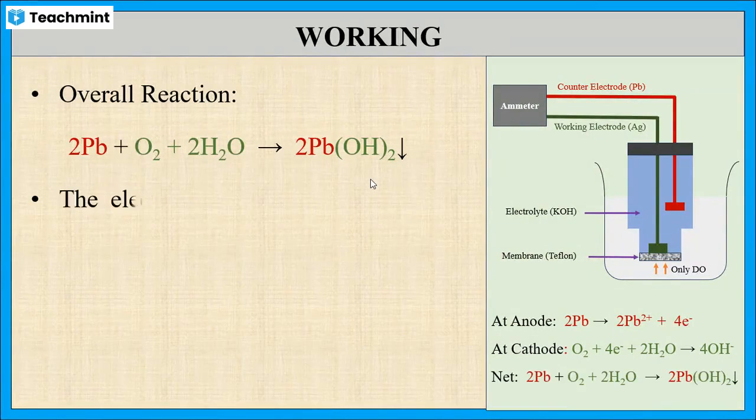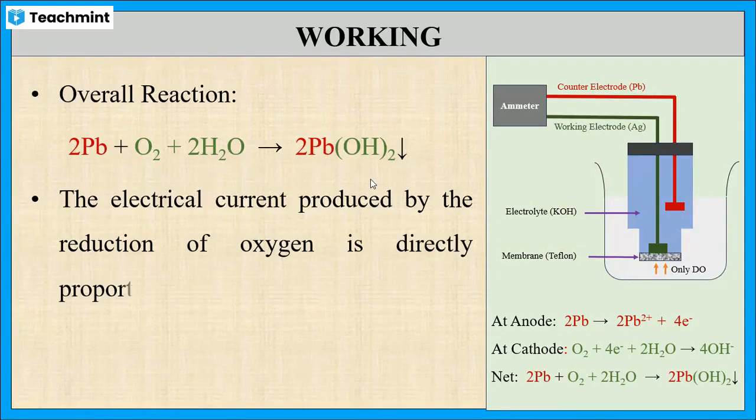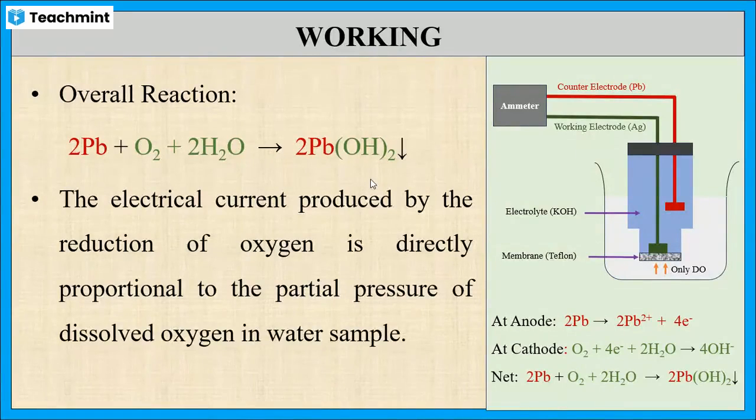The electrical current produced by the flow of electrons from anode to cathode is directly proportional to the concentration of dissolved oxygen in water.